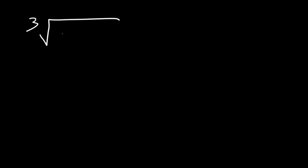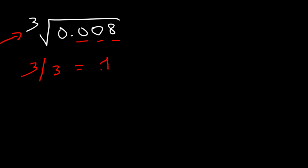Now what is the cube root of a decimal? Let's say 0.008. Notice that we have 3 digits to the right of the decimal point. Take that number and divide it by the index number; your final answer should have 1 digit to the right of the decimal point. We know that the cube root of 8 is 2, so this is just going to be 0.2, which has 1 digit to the right of the decimal point.